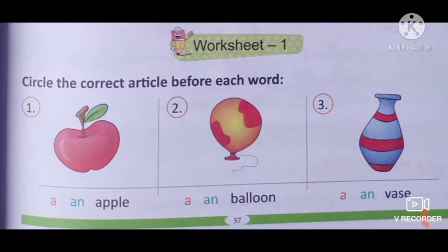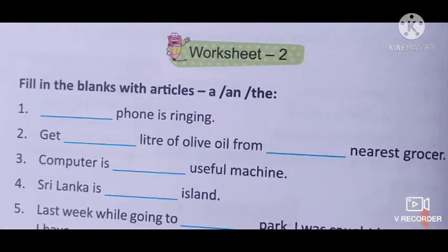I hope you all have understood the concept. Now let's do the worksheet — worksheet number one: circle the correct article before each word. Here pictures are given to you; you have to see the picture and circle the correct article. Two articles are given — circle the correct one. First picture: a / an apple. Number two: a / an balloon. Number three: a / an, vase.